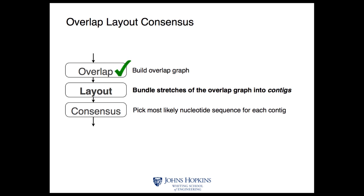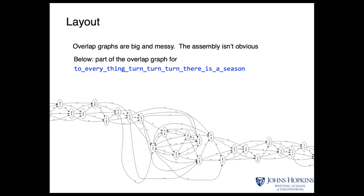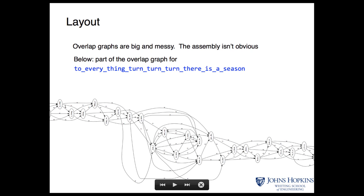That's the job of the second stage of the assembler, called the layout stage, which bundles stretches of the overlap graph into contiguous sequences or contigs. To illustrate this, I'm going to use an example of reconstructing a fragment from a song: 'To everything, turn, turn, turn, there is a season.' The reason we selected this is there's a repeat — the word 'turn' is present three times. If we fragment this sentence into many copies with about five-character words and construct an overlap graph, it looks pretty nasty.